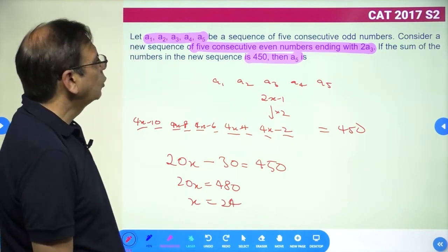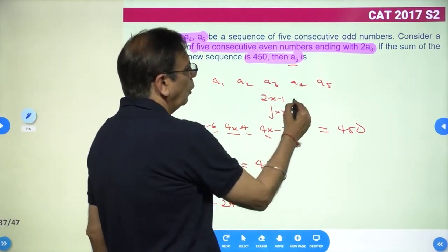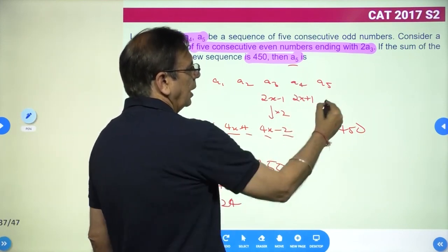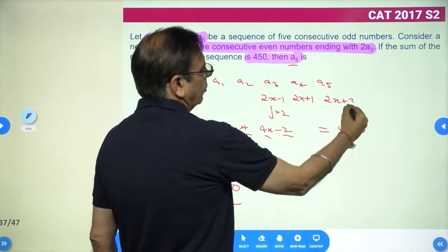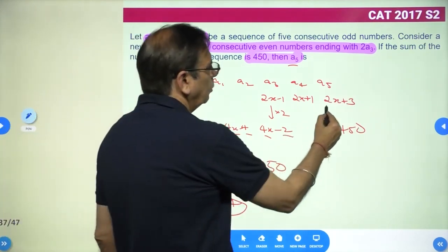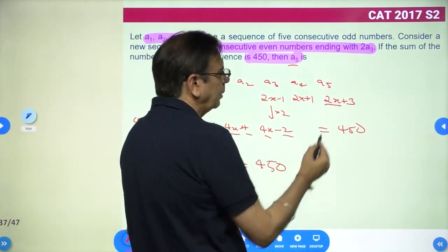So x is 24. What do we need to find? A5. So 2x minus 1, then this will be 2x plus 1 and this will be 2x plus 3. If x is equal to 24, 2x plus 3 becomes 48 plus 3, which is 51.